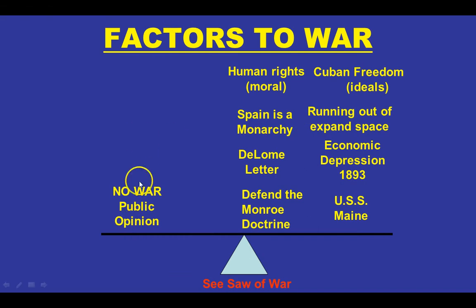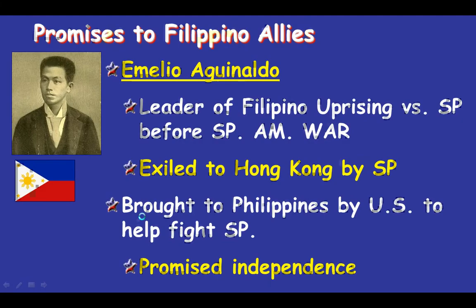Public opinion shifted toward war as events became too numerous and heavy to keep the country out. Spain also had the Philippines as a colony for the last 400 years, and Filipinos had attempted their own revolution around the same time. Their leader, Emilio Aguinaldo, was exiled to Hong Kong after one failed attempt. The United States had a fleet based in Hong Kong, a British port at that time.